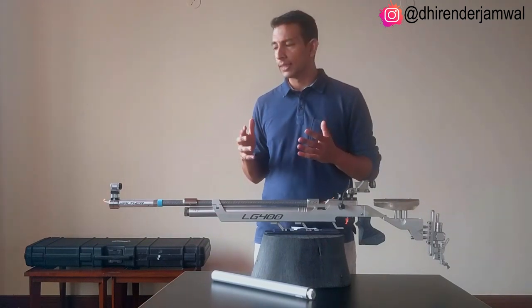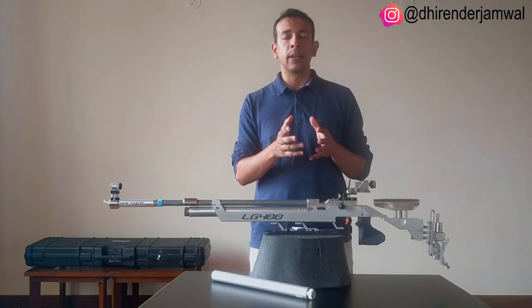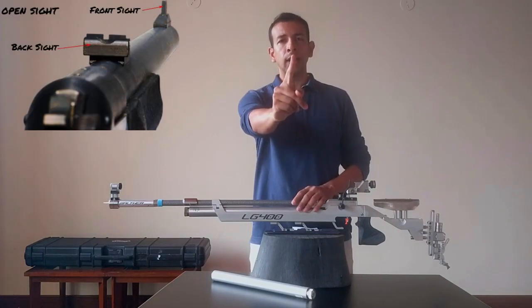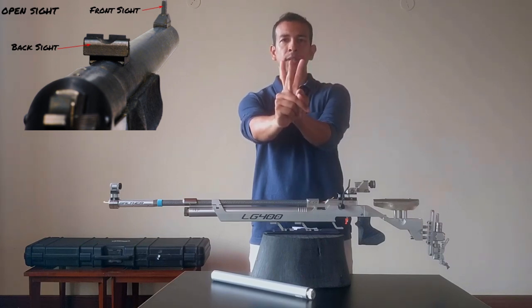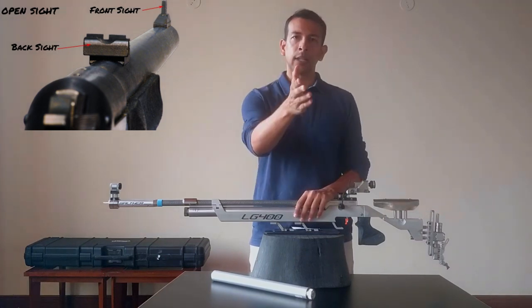First we will start with the sights. If you have shot before, you would have shot with something called an open sight. Traditionally it will be a vertical front sight and either a U or a V back sight which you align with the front sight. And if it is properly aligned with the bull of the target, then you will get a bull sight.